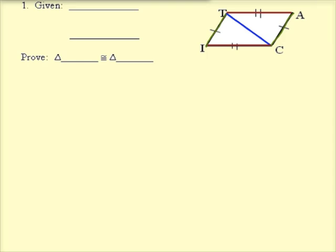So first off, remember, we were trying to prove that triangle T, I, C was congruent with triangle C, A, T. We were given the two green sides are congruent. So that's T, I and C, A. And then also we have the two red sides are congruent. So we've got what we have given. We have what we're trying to prove.